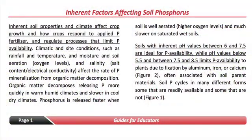The second part of the guide covers inherent factors, and those basics would need to be covered — things like soil texture and climate, also pH factors. If we have a low pH we're going to tend to tie up phosphorus more, and similarly a higher pH could also tie up phosphorus.